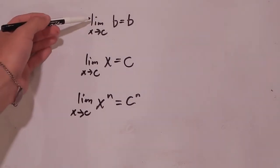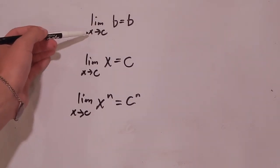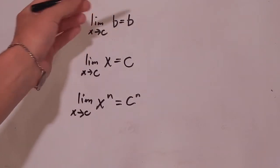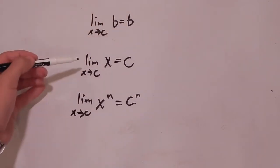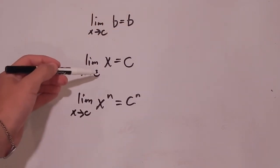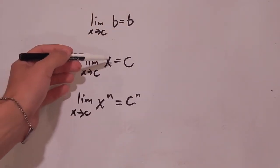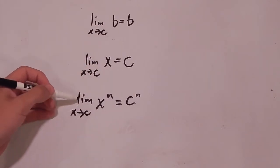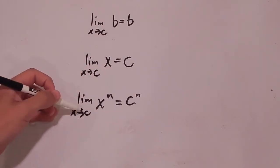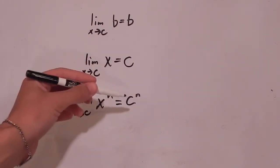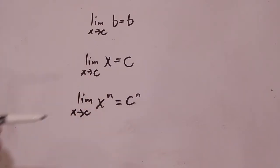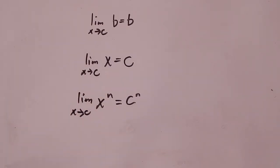So the three limits are: the limit as x approaches c of b is equal to b; the limit as x approaches c of x is equal to c; and finally, the limit as x approaches c of x to the n is equal to c to the n, where n is a positive integer. So we're just going to jump right in.